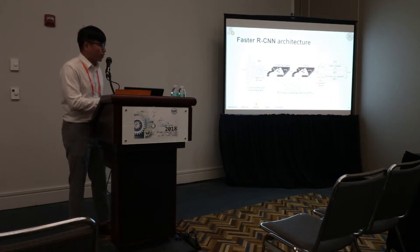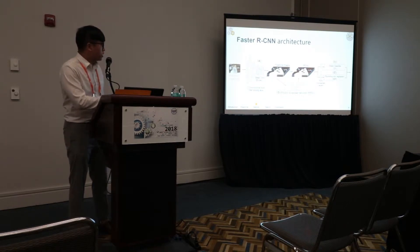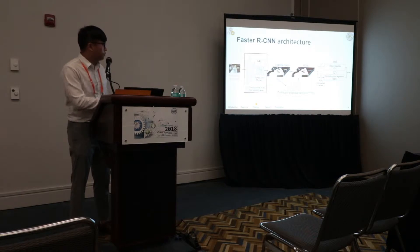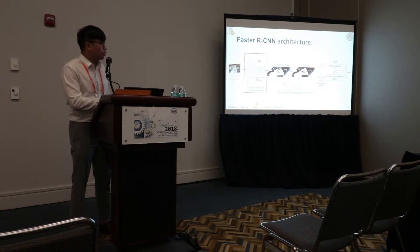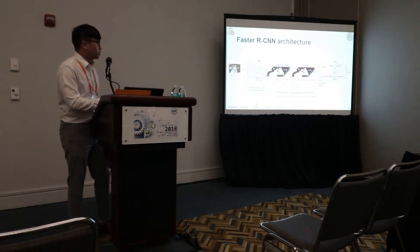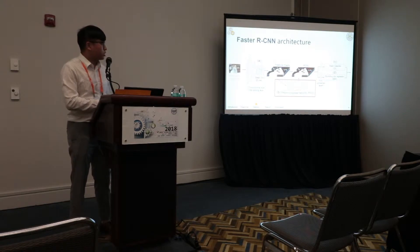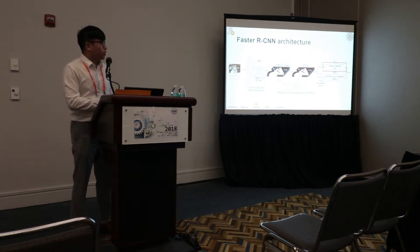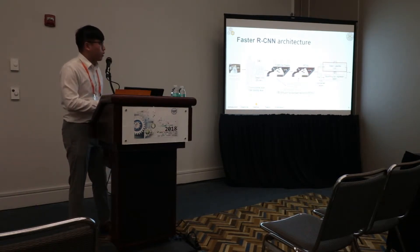This is the Faster RCNN architecture. Firstly, when the image goes in, the base CNN — which is ZFNet — generates feature maps. Secondly, the Region Proposal Network (RPN) generates region of interest proposals using the feature maps from the base CNN. Lastly, the object classifier classifies the object in the image and generates the coordinates of the bounding box using the proposals from RPN.